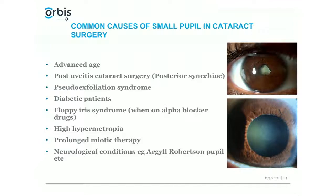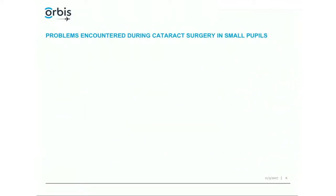Post-uveitic cataract, diabetic patients, and floppy iris patients may start with a small pupil, or a pupil that refuses to dilate fully, or a pupil that starts becoming small as surgery progresses. High hyperopes also have this issue. In the past, patients on miotic therapy for glaucoma would have such small pupils that we'd have to do broad or sector iridectomies, but today we do pupiloplasty. Neurological conditions should also be remembered.